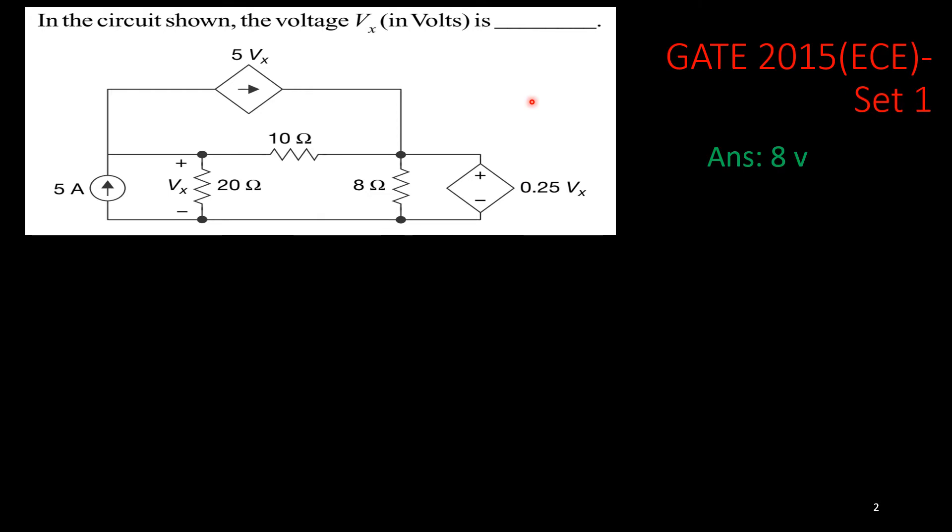Now, here we need to find out the potential Vx. And I think it is a simple circuit, very simple to solve. Now, you see the approach. What we will do? First of all, we should redo the circuit in our convenient way.